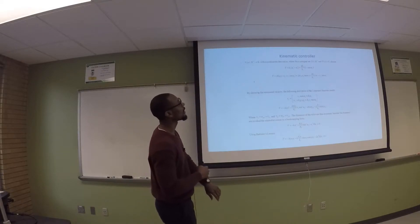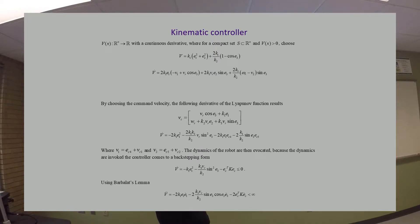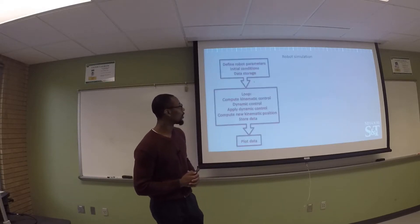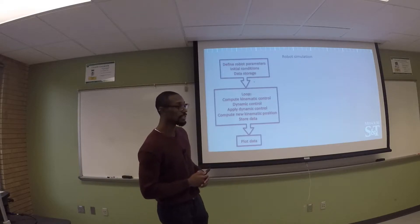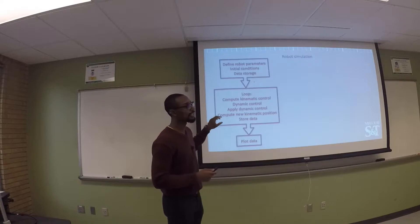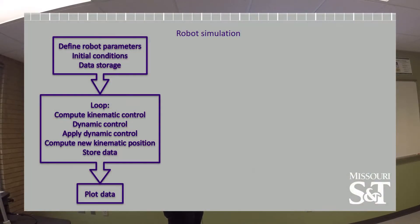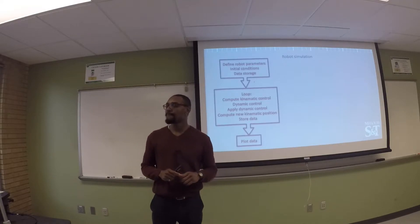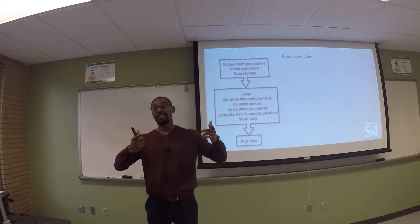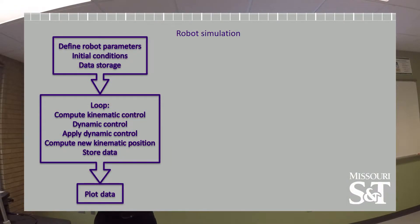The proof of the kinematic controller — which is what VC refers to — is included here for completeness, but we won't spend much time on it as it's not the focus of the project. The simulation is broken up into three main steps: defining robot parameters, initial conditions, and data storage; computing the kinematic and dynamic control and applying it to the dynamics to get a new kinematic position; and finally storing all data into vectors for plotting.